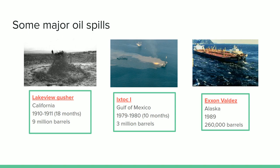A little more recently, and also in the Gulf of Mexico like the Deepwater Horizon case, is the Ixtoc event — another blowout where an oil rig went down. In 1979 to 1980, for about 10 months, oil was spewing into the Gulf of Mexico. Overall about 3 million barrels of oil were spilled into the Gulf, which is a little bit less than the Deepwater Horizon oil spill.